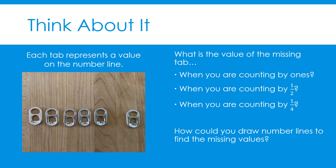Think about it. Take a look at the picture. Each tab represents a value on the number line. What is the value of the missing tab when you are counting by ones? What about when you are counting by one-half or when you are counting by one-fourth? How could you draw number lines to find the missing values? If you are able, discuss with someone in your household.